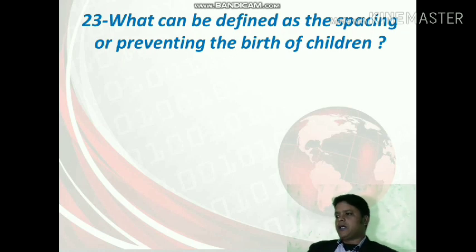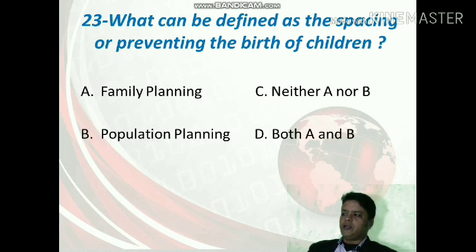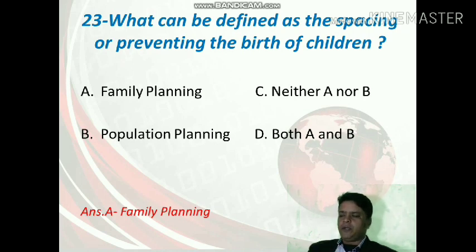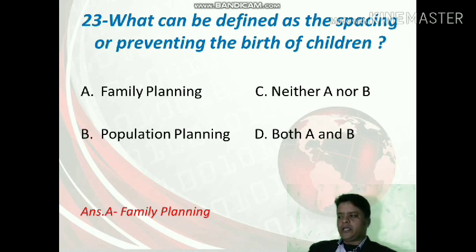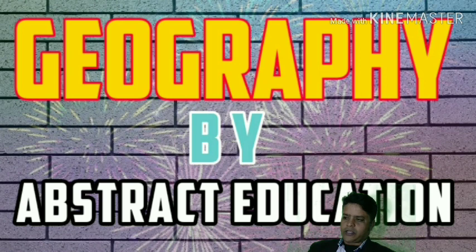The last question: what can be defined as the spacing or preventing the birth of children? This refers to the spacing between children and controlling the number of children. The options are family planning, population planning, neither A nor B, or both A and B. The correct option is A — family planning programs are governed and run by the government to control the population of a country.